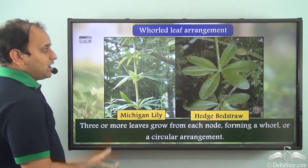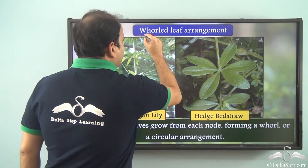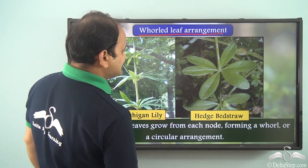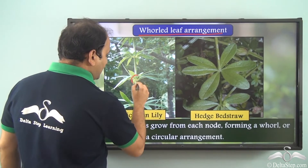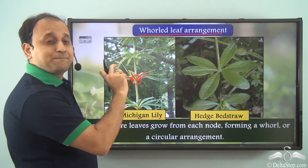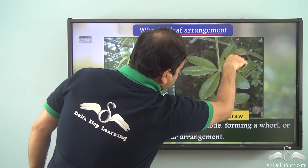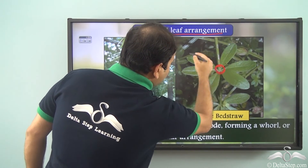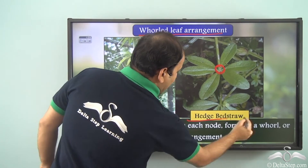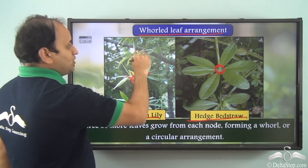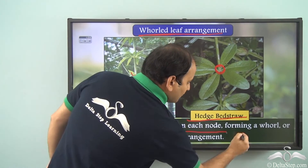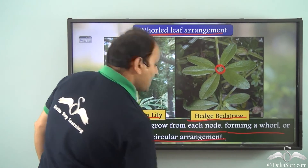Now let's come to another arrangement called whorled leaf arrangement. In whorled leaf arrangement, from one single node, we have many leaves coming out in a circular pattern — you can see they are making a circle. For example, Michigan lily and hedge bedstraw show this type of arrangement. So three or more leaves grow from each node forming a whorl or a circular arrangement.